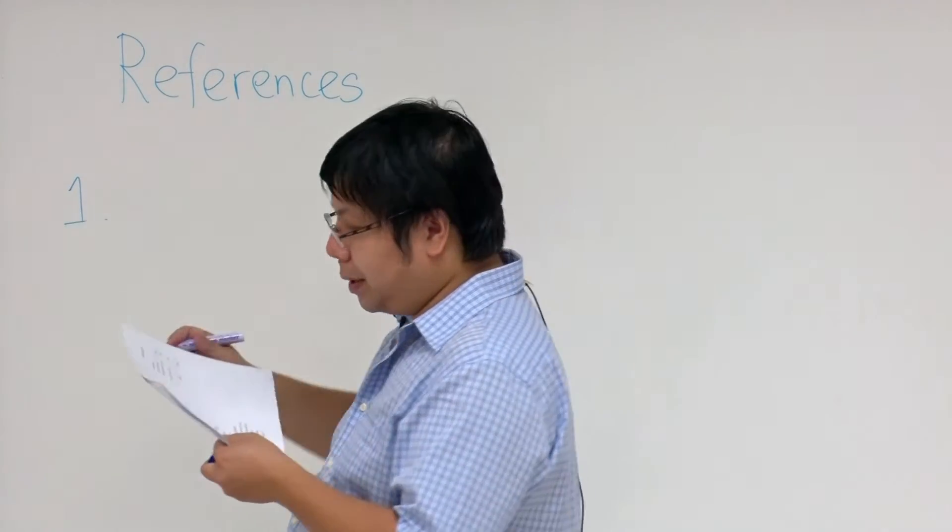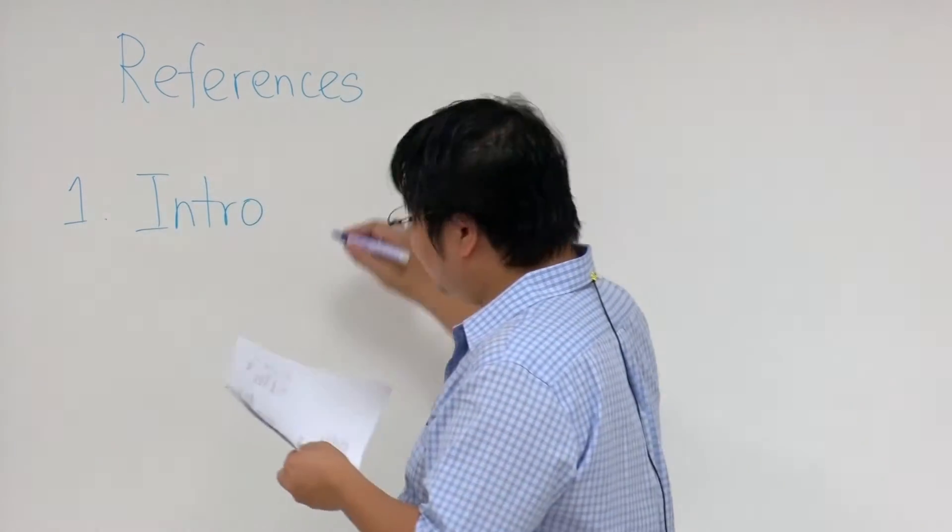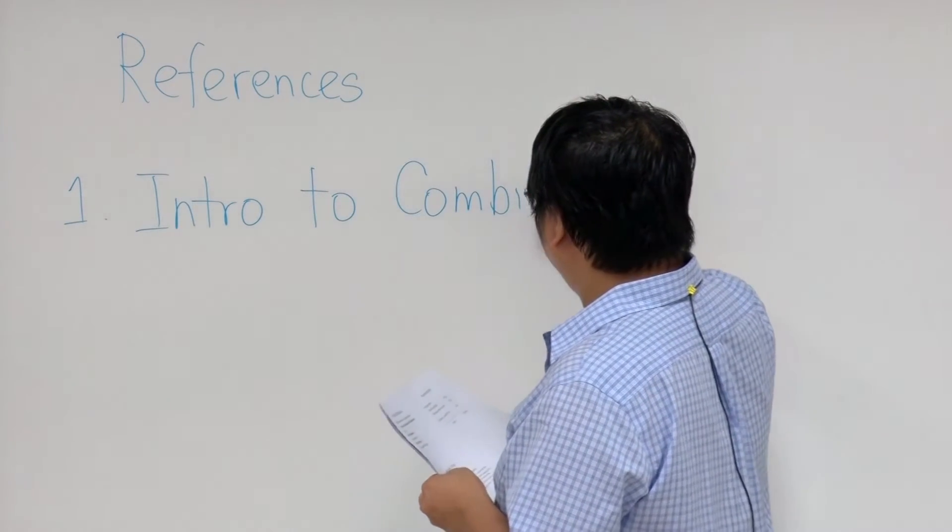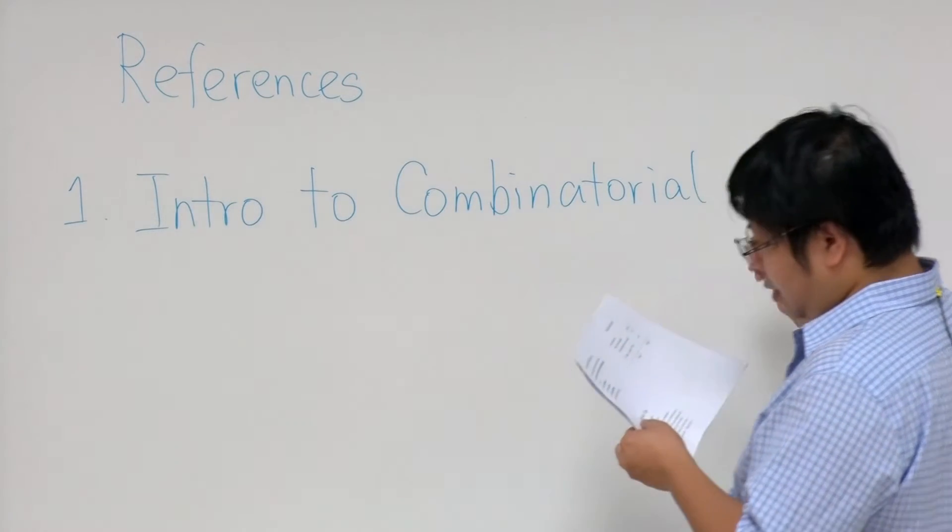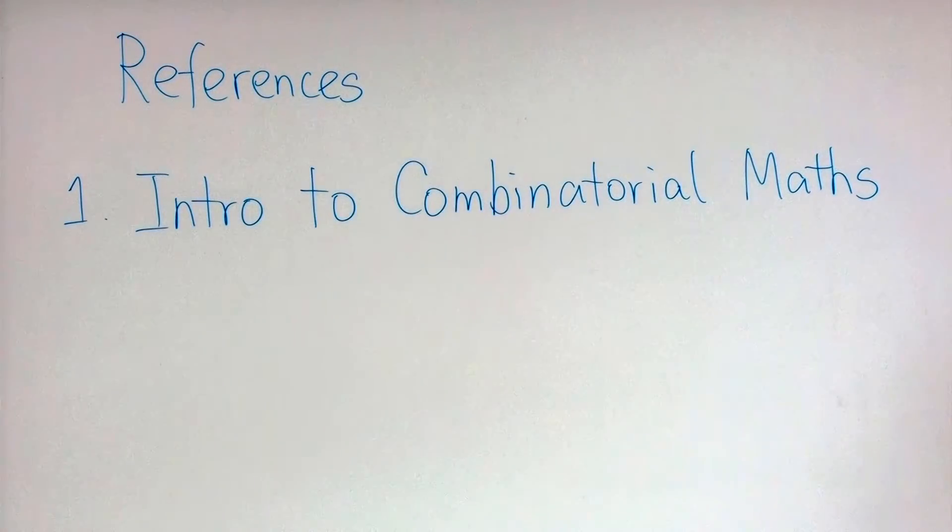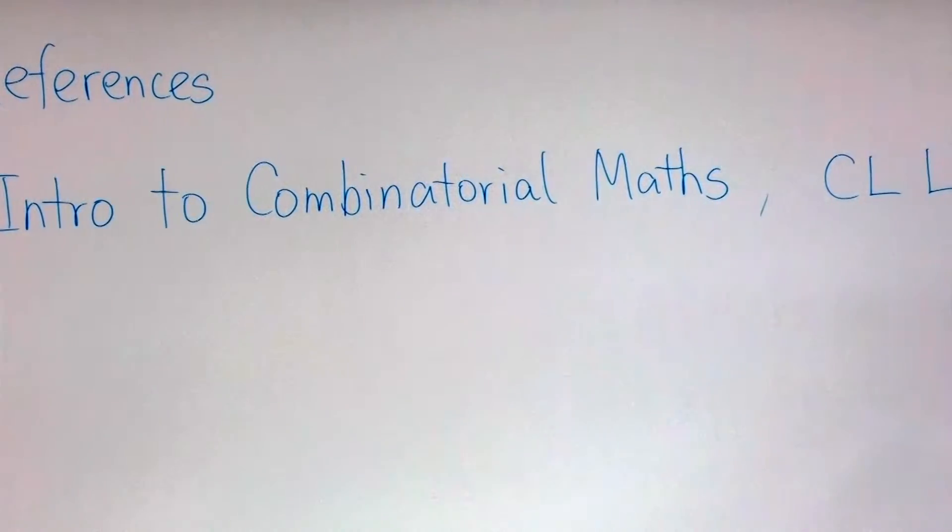So the first one is the introduction to combinatorial mathematics. This is the first book. And this textbook is by C.L. Liu.